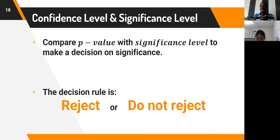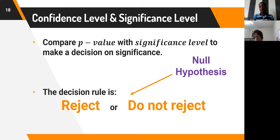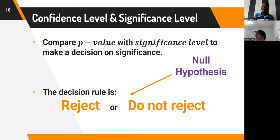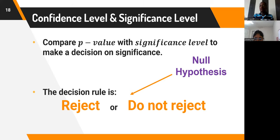Our decision rule is based on the null hypothesis. The null hypothesis states that our parameter is not significant — equal to zero. If we reject the null hypothesis, we accept that the parameter is significant, which goes in favor of the alternative hypothesis. Failing to reject the null hypothesis concludes that the parameter or sample statistic is indeed not significant.